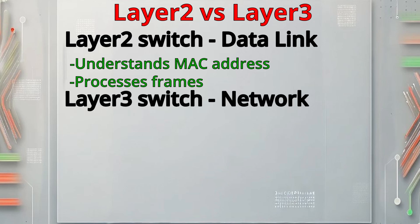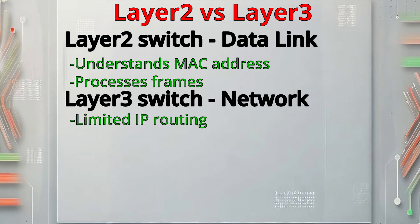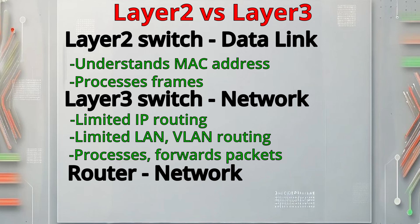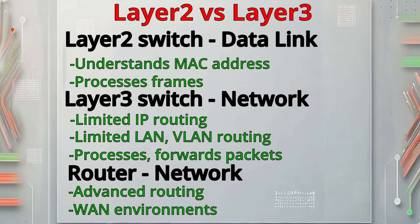A Layer 3 switch has all the capabilities of a Layer 2 switch, but it operates at the third layer of the OSI model, the network layer, in the same way a router does. A Layer 3 switch can even perform some of the same actions as a router, such as limited IP routing. A Layer 3 switch works at both Layer 2 and Layer 3 and supports only Ethernet interfaces with limited routing to LANs and VLANs. A router works only at Layer 3 of the OSI model and can support many different types of interfaces, handling advanced routing protocols and functionality. Layer 3 switches are mostly used for internal networks, while routers are used for connections in a WAN environment.